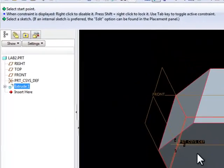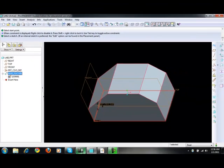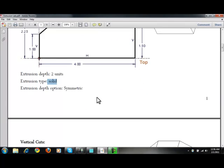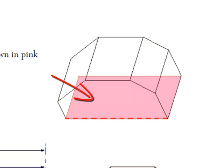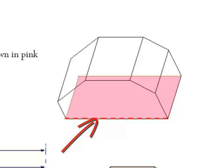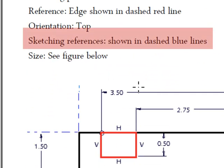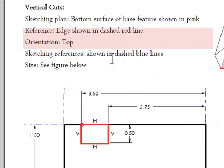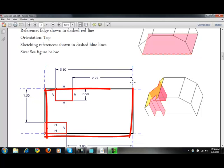This is your base feature. You could rename it base feature, though that's not required at this point. The next step is to do the vertical cuts. If you look here, you're sketching on the bottom. Your reference is this edge here, marked in red, orientation is top, and sketching references — when you get into sketching mode, you'll need to know which ones. It's all four sides of the bottom.